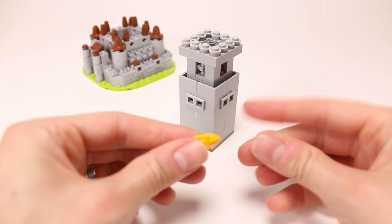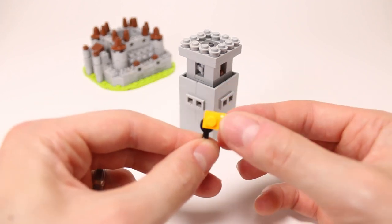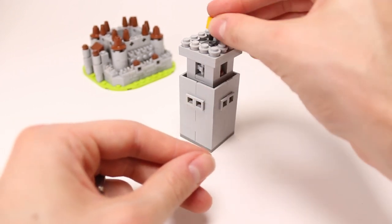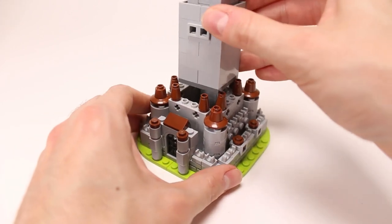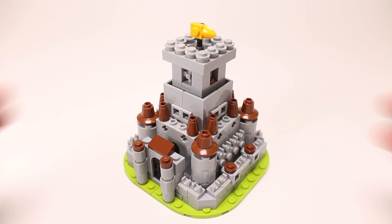The last detail that we are going to add to this tower is a little flag. So we are using this bar with a plate on top and a tooth plate in orange. Now we can attach the keep to our castle. And there you have it.